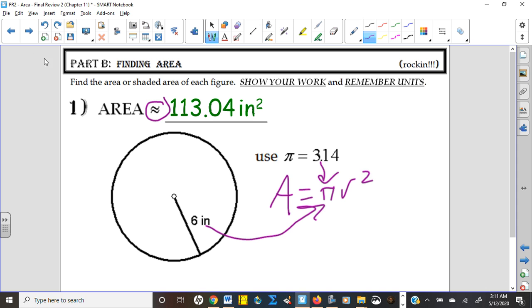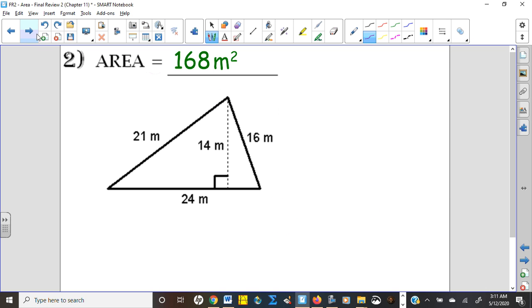Number two, one half base times height for a triangle, or base times height over two. It's really kind of personal preference. They mean the same thing. Multiplying something by one half is the same as dividing it by two.